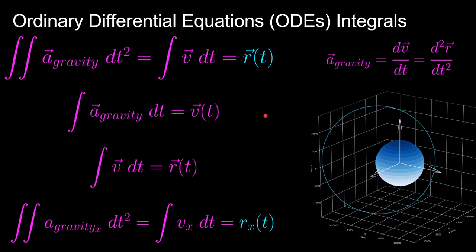To solve for position, we start with the acceleration, integrate once to get velocity with respect to time, and then integrate the velocity to get position with respect to time. Position and velocity together create six numbers — x, y, z velocity and x, y, z position — that describe the orbital state of a spacecraft. This isn't the only way to describe the state; there also exist other ways like the Keplerian orbital elements or the equinoctial orbital elements. We won't be solving these integrals by hand — that's what computers and ODE solvers are for, which will be the topic of the next video. Each vector equation here is actually three equations, one each for the x, y, and z components — just a compact notation.